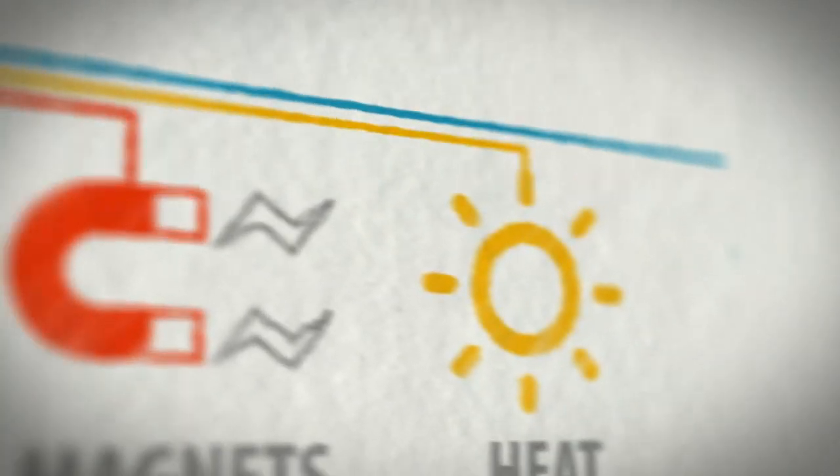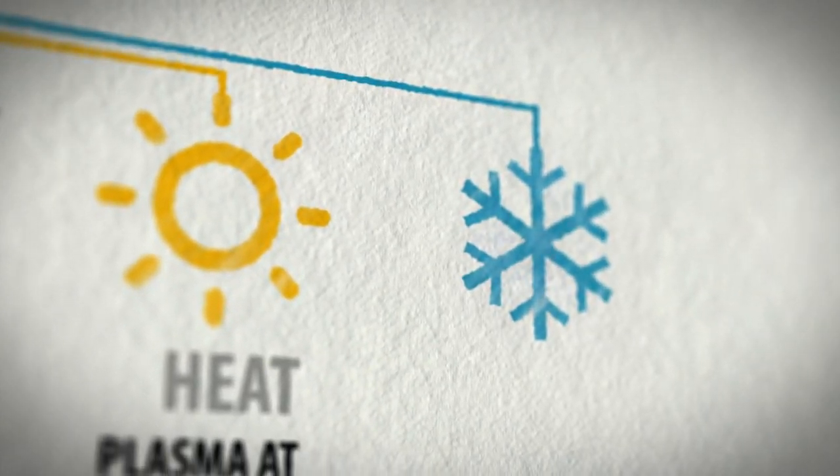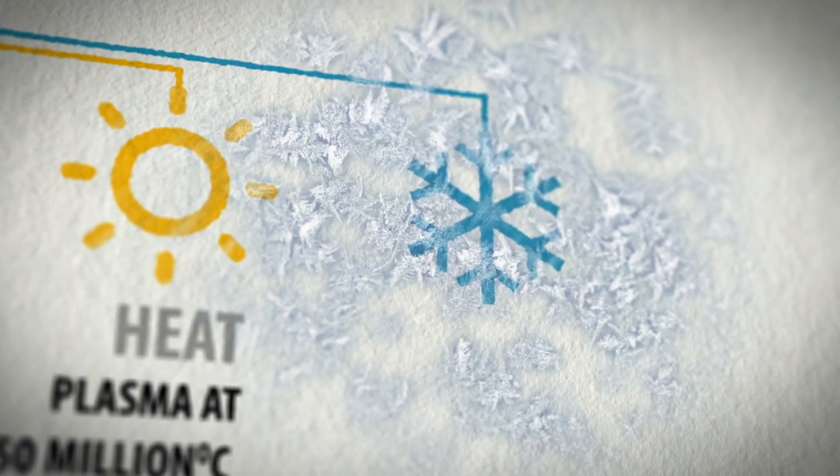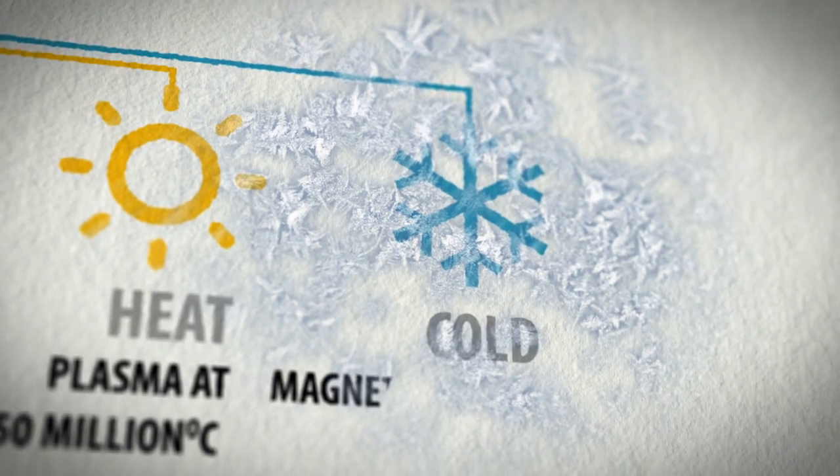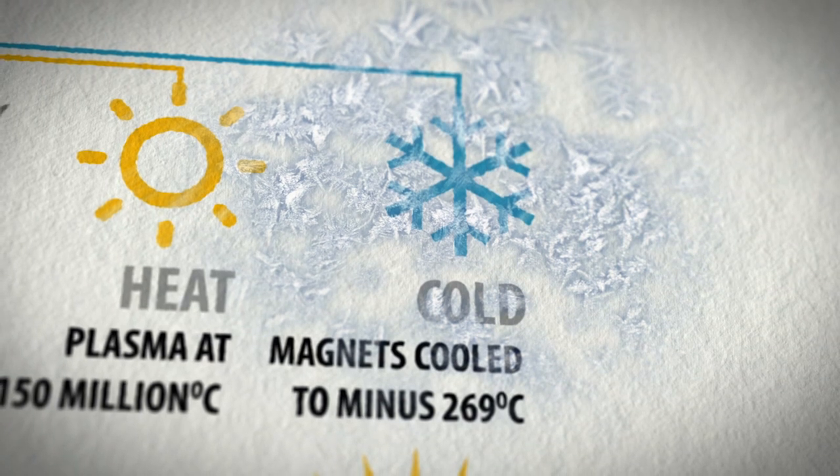Only centimeters away from the fusion furnace, a sophisticated cryogenic and thermal shielding system will guarantee temperatures colder than on the dark side of the Moon, so that the magnets remain superconducting at a comfortable minus 269 degrees Celsius.